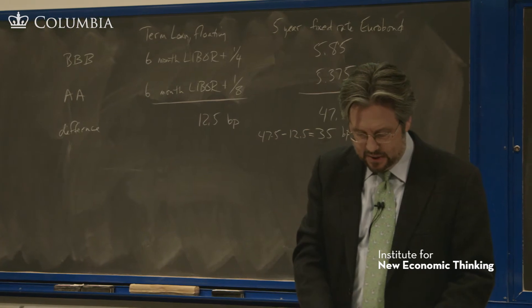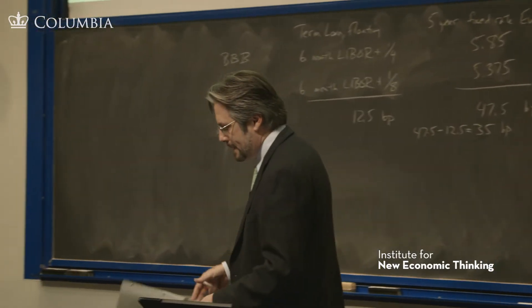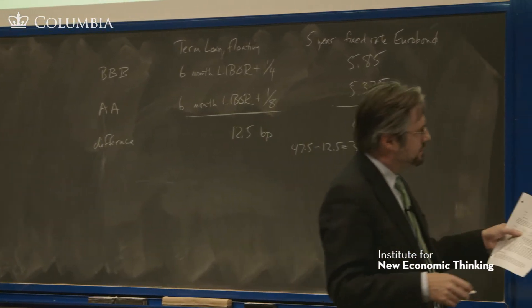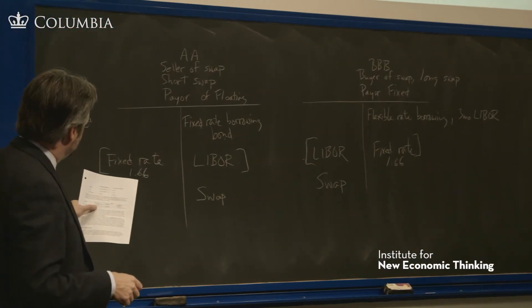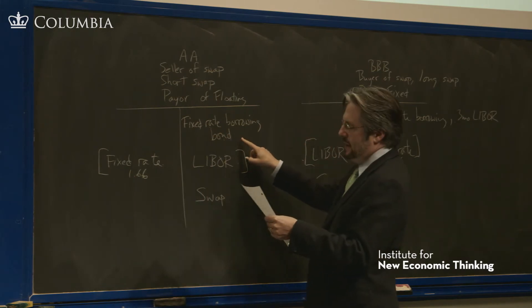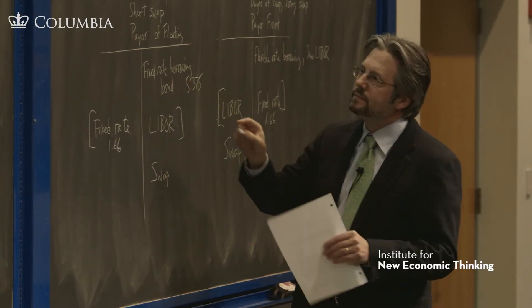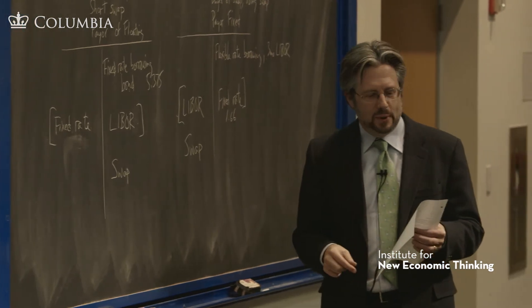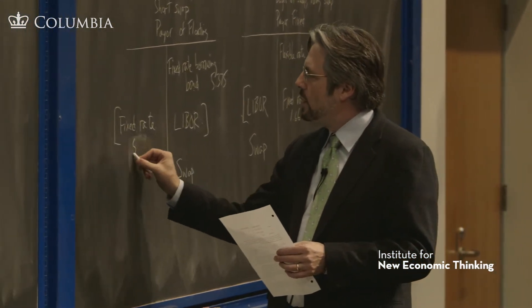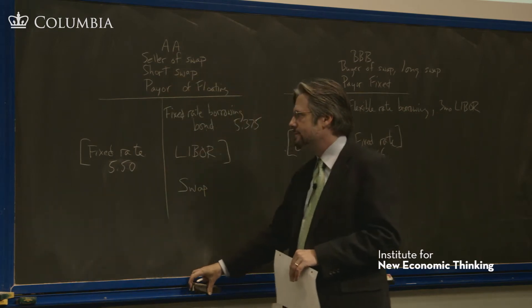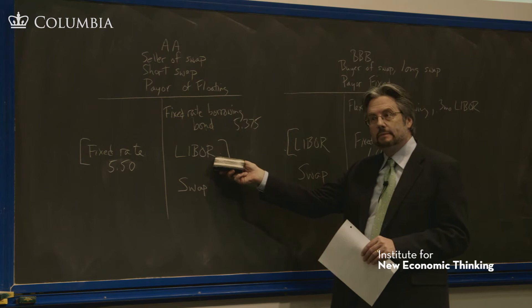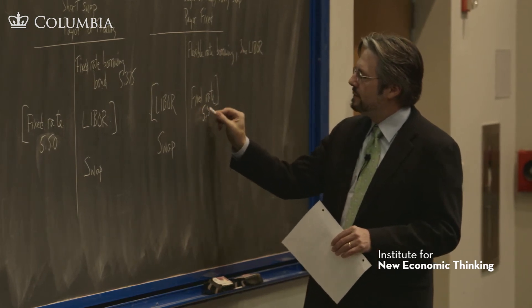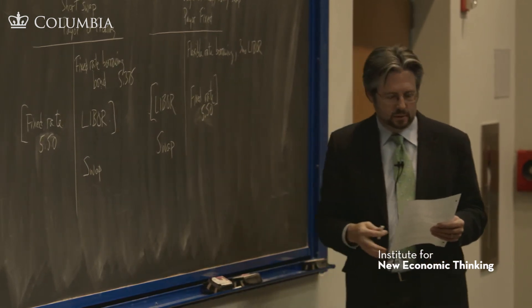She then says, let's have Double A do its fixed rate borrowing at 5.375%, and instead of today's swap rate, let it do a swap at 5.50% against LIBOR flat, LIBOR plus zero here. That's going to be the same here. This fixed rate will be 5.50% because it's a bilateral transaction.